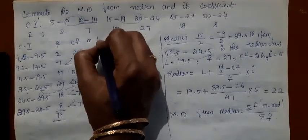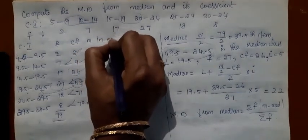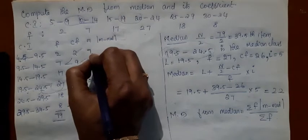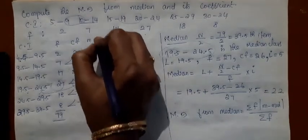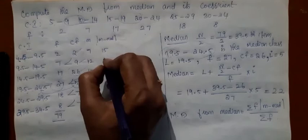And then let us have a column M minus median. 7 minus 22 minus 15. Write it as plus 15 because you have modulus.